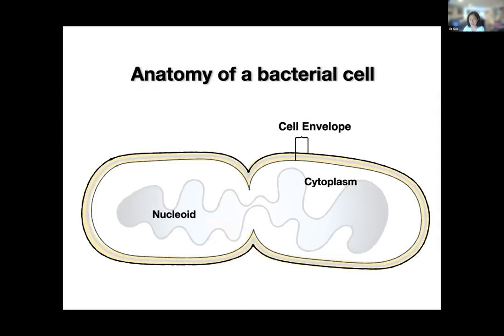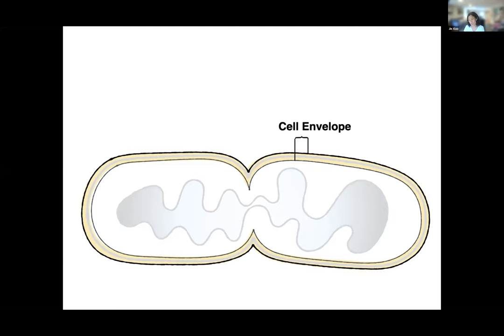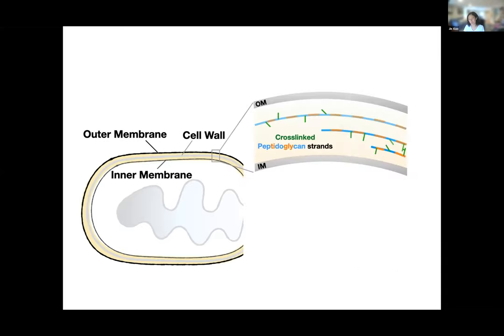Let me tell you a little about the anatomy of a bacterial cell, because we have such a broad spectrum of audience. Bacterial cells have a cell envelope that encompasses all the nucleoid and cytoplasm. My talk today is really going to focus on the cell envelope. For gram-negative bacteria, there are three layers: an outer membrane, an inner membrane, and between those two membranes there is one gigantic molecule called the cell wall.